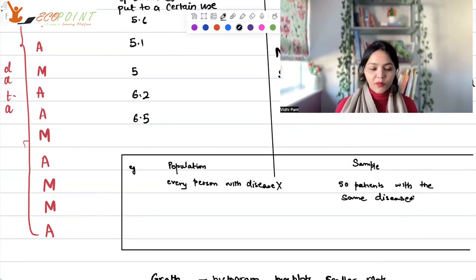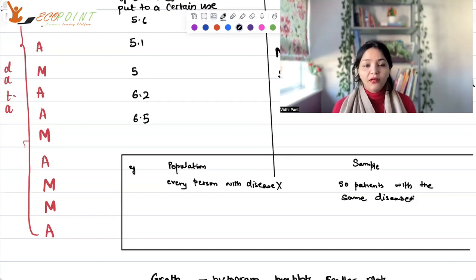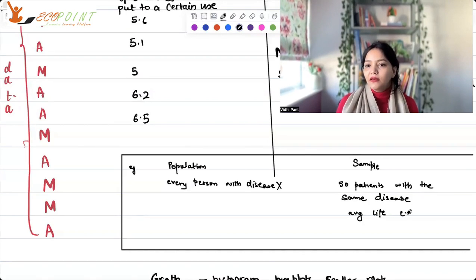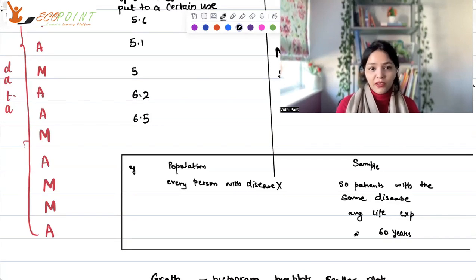But what instead this person could do is that this researcher can, at least in their own country, find some 50 people or 100 people, 50 patients with the same disease. That is a sample. Now, why is this process done?